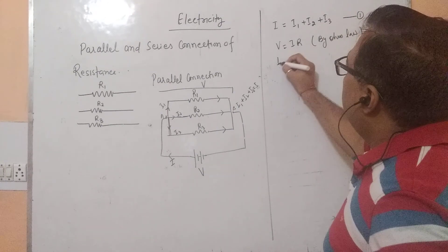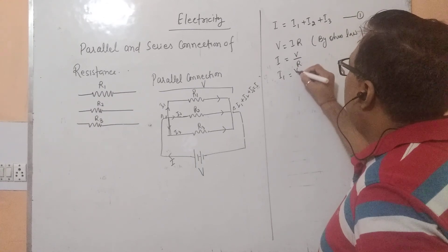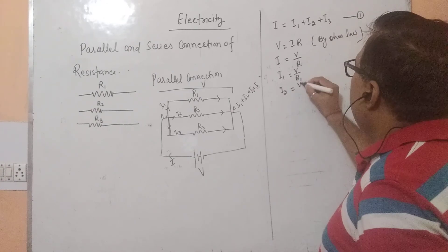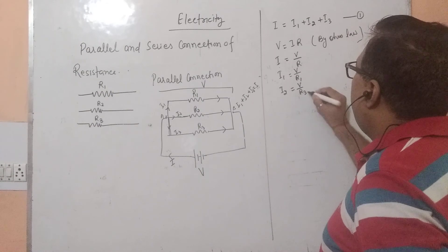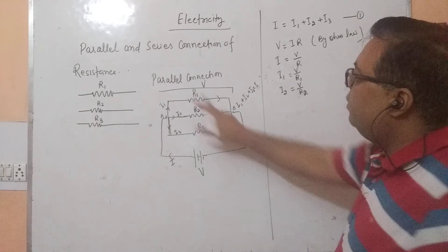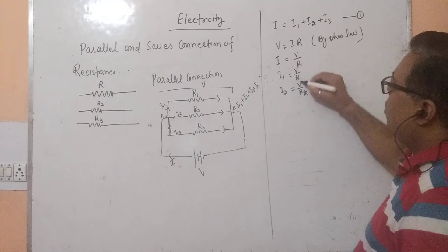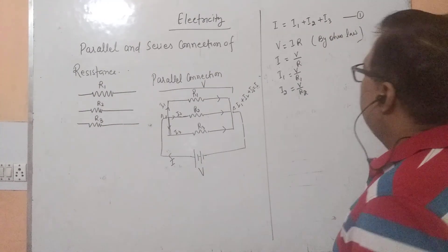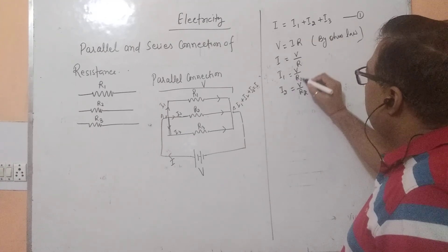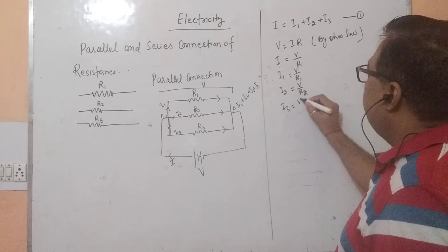So, what will be I? I is equal to V by R. So, I1 is equal to V by R1, I2 is equal to V by R2, and I3 is equal to V by R3. One important thing you have to remember: for every resistance, potential difference will be the same in case of parallel connection.